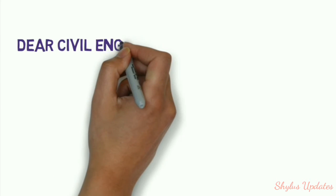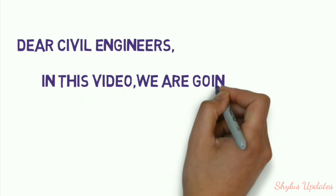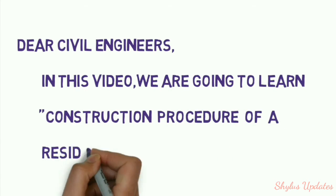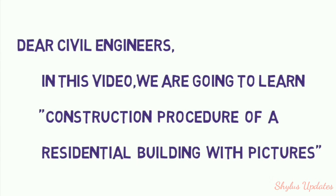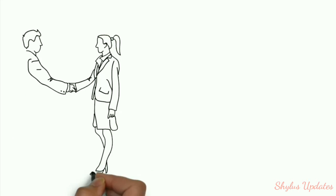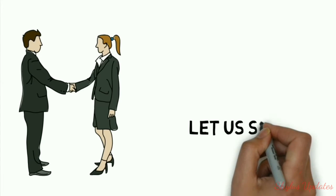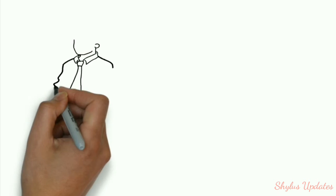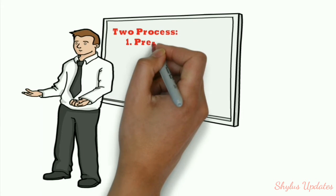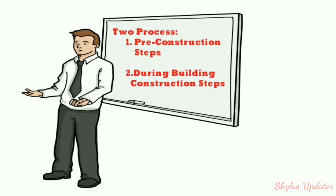Dear civil engineers, in this video we are going to learn the construction procedure of a residential building with pictures. Construction process involves two steps: pre-construction process and building construction steps.